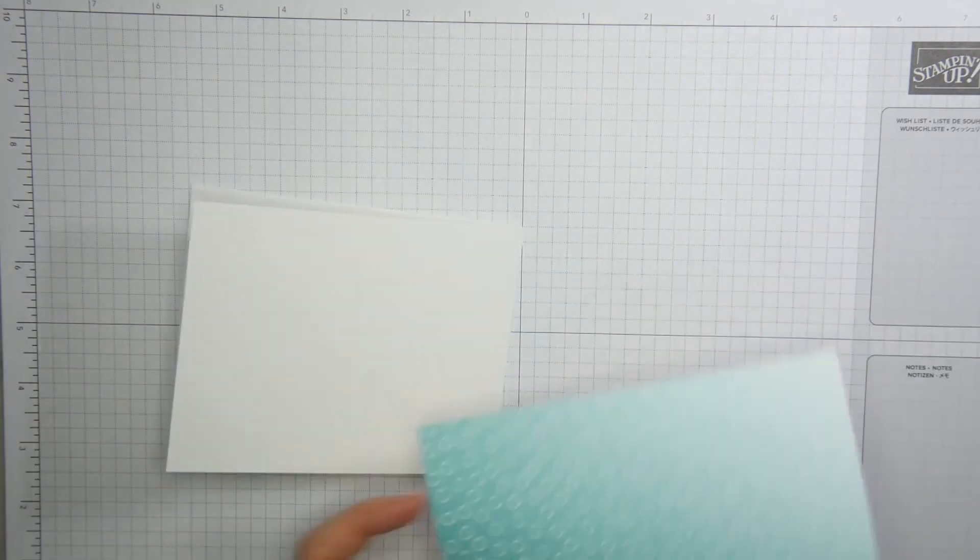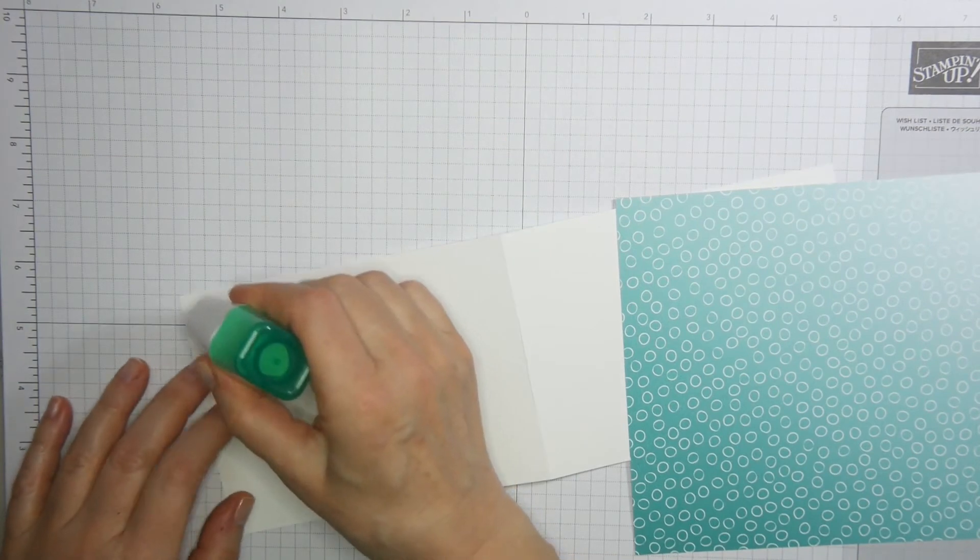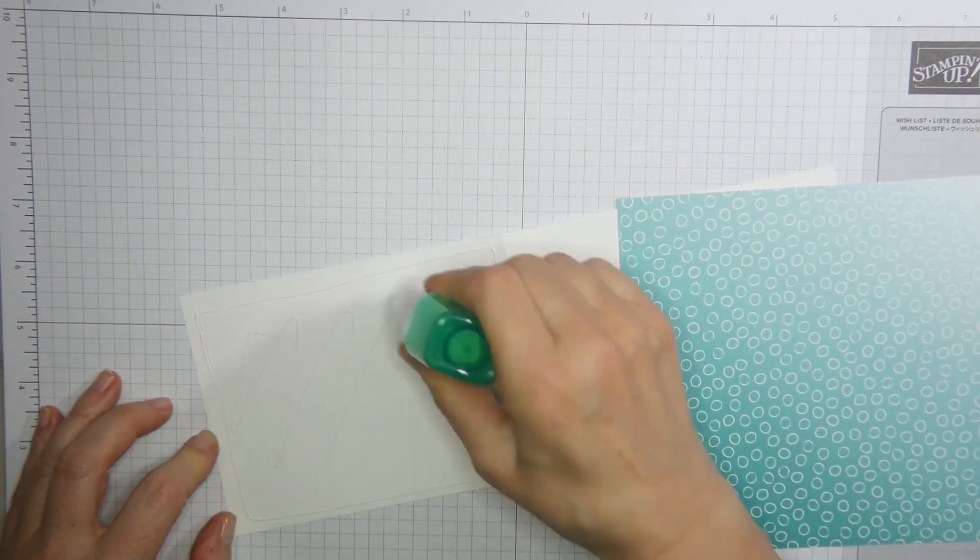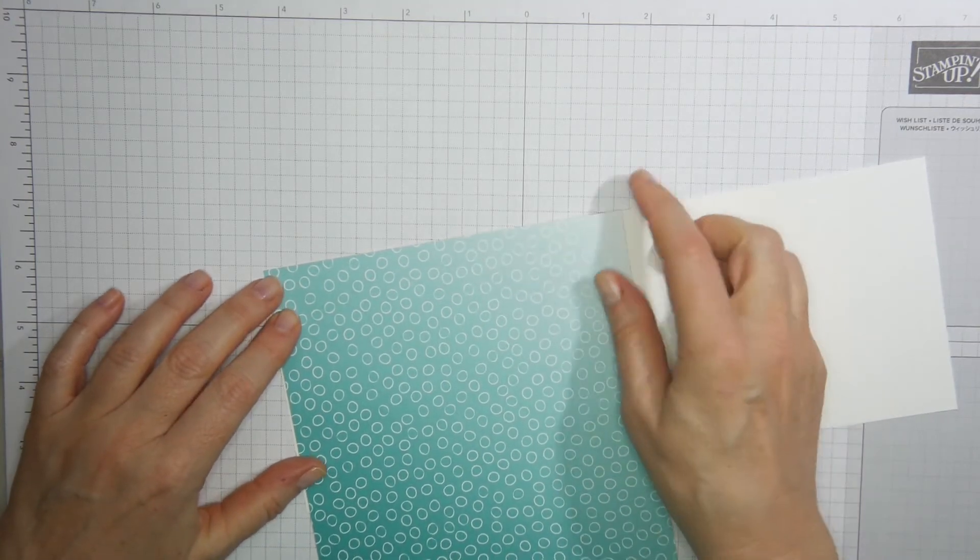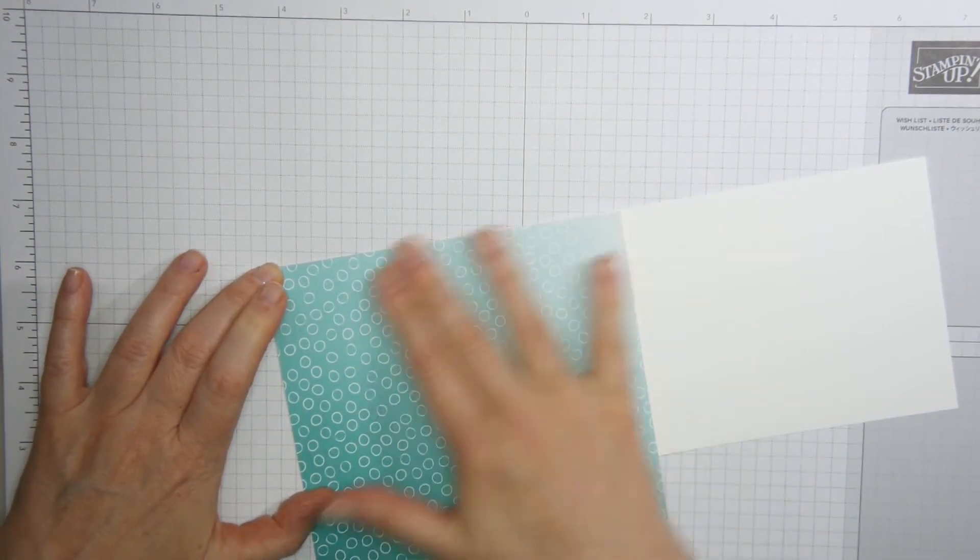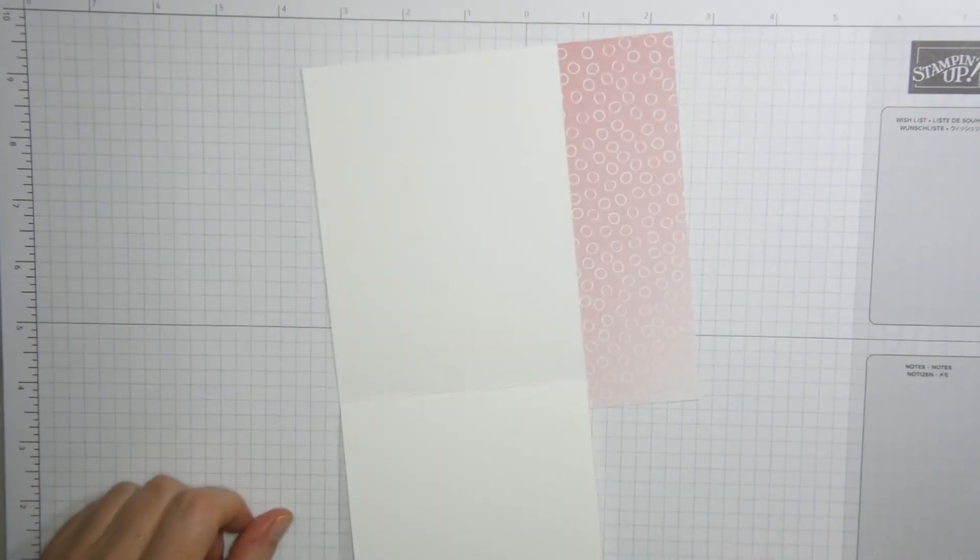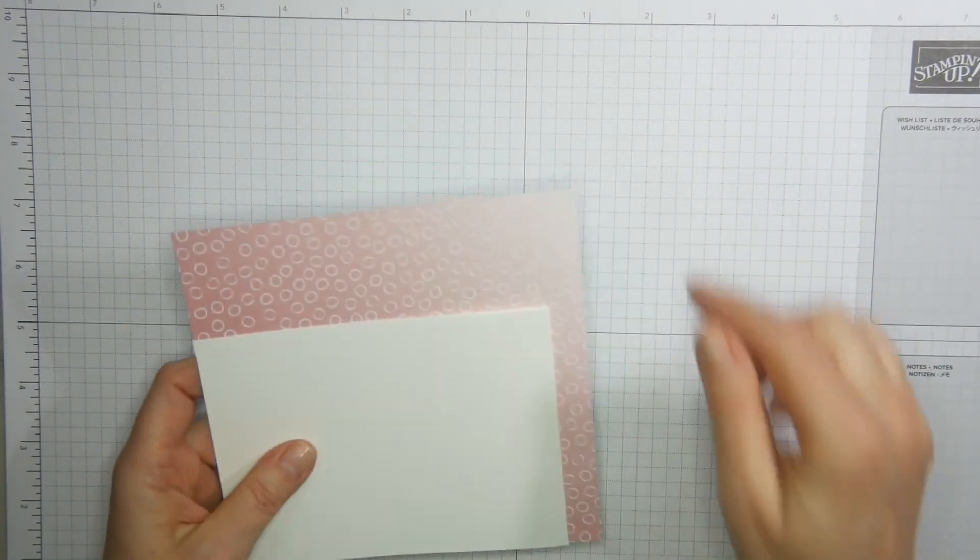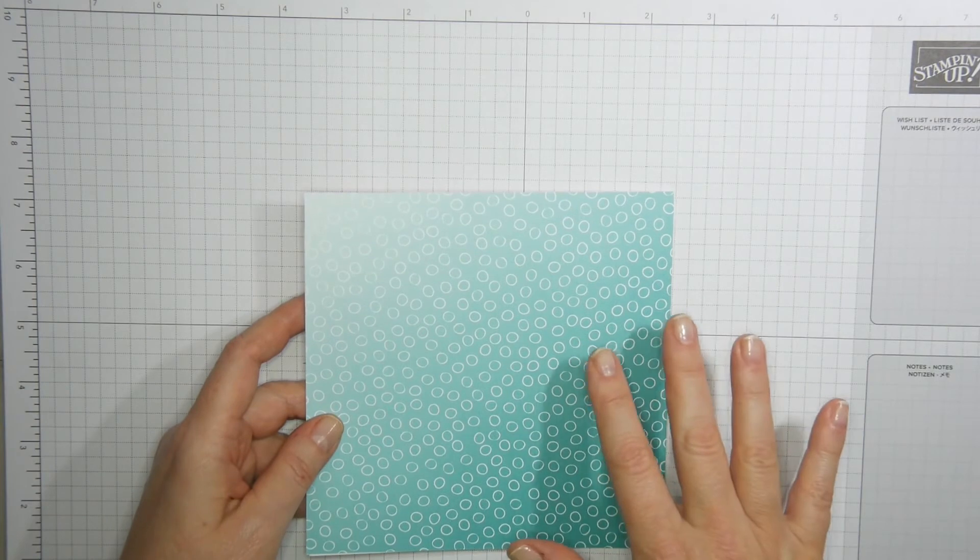I'm going to stick my paper to the card. I want the lighter piece to go towards the top corner. I'll take my Tombow and adhere my designer series paper to the base card. I was making a card in Rococo Rose. And this is not Rococo Rose, is it? It's Bermuda Bay. I should have taken the other color. I'll do that for a different card.